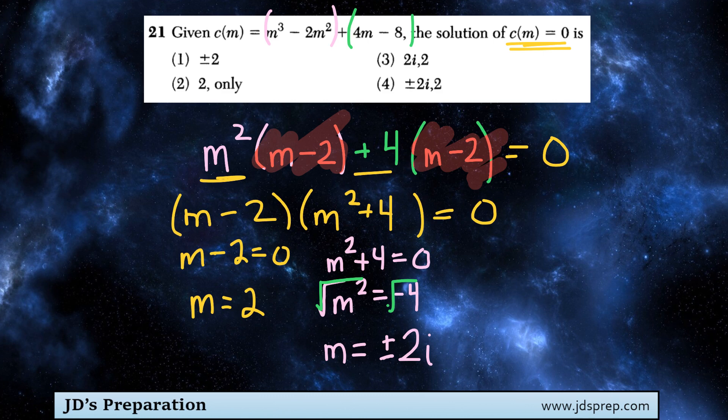So those are, I guess that leaves three answers. m could equal 2, positive 2i, or negative 2i. And that matches option number 4.